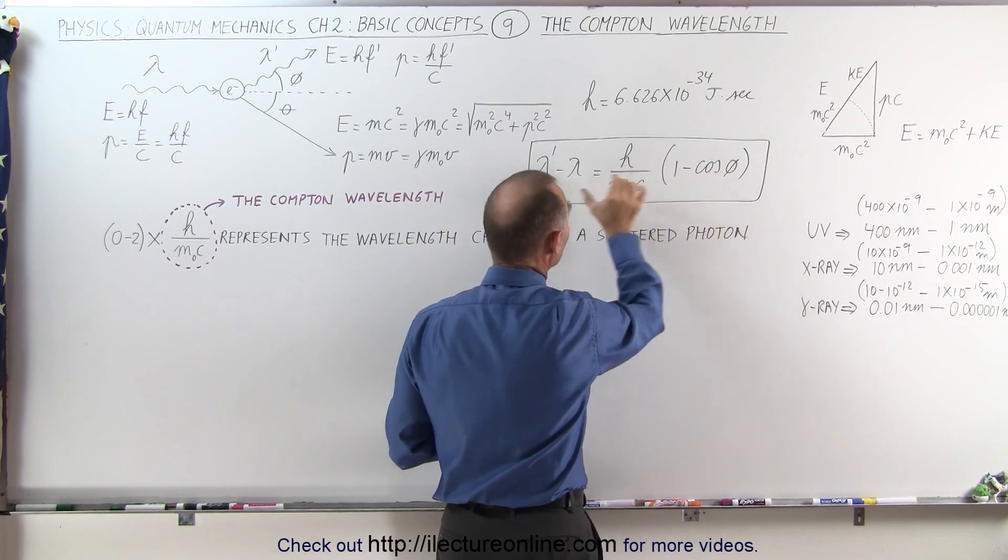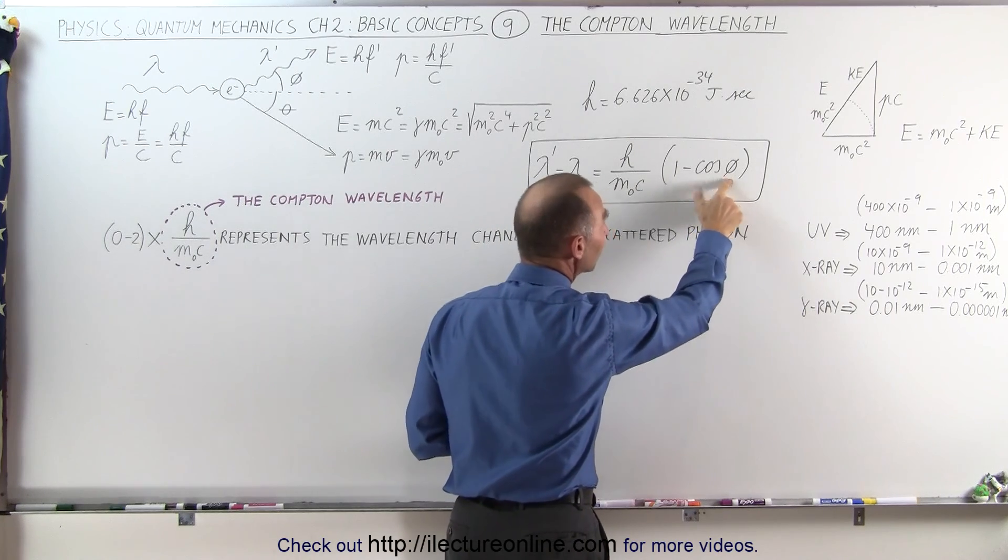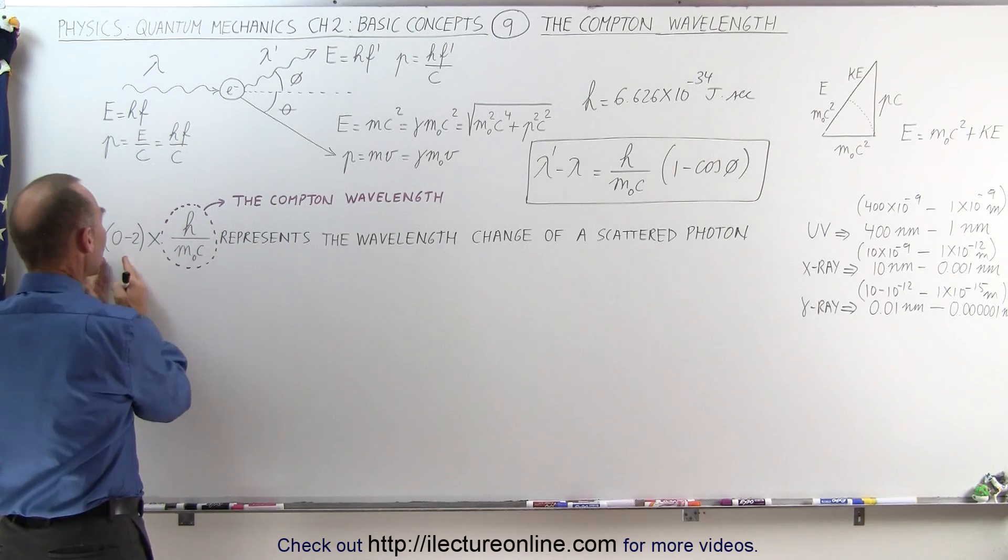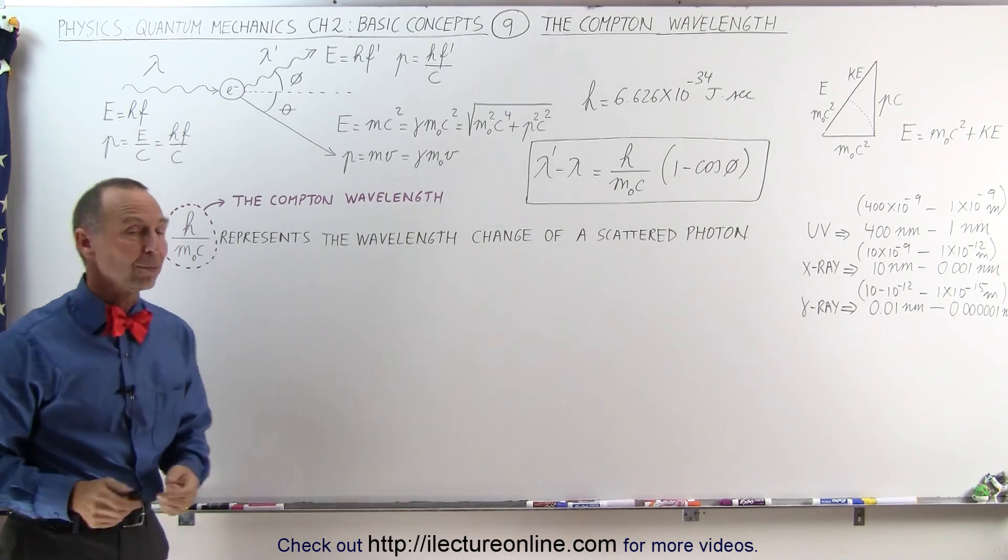this becomes 0 and the difference in wavelength is 0. And for a scattering angle of 180 degrees, this becomes 2 and then the difference in the wavelength will be twice this quantity right here we now know as the Compton Wavelength.